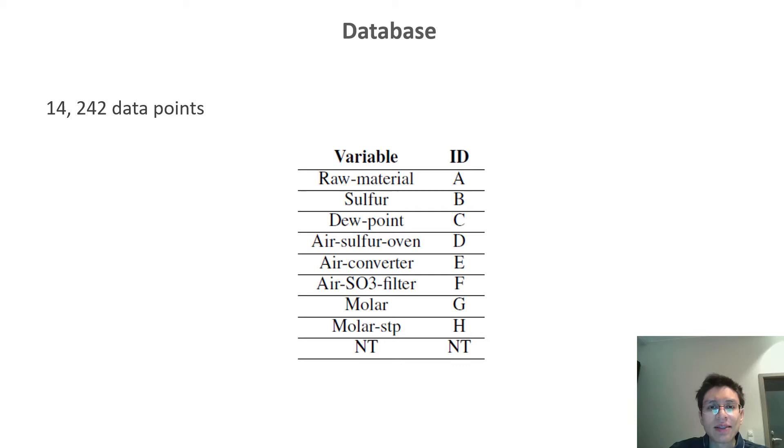In order to answer the research questions, we analyzed a database with approximately 14,000 data points. Each data point has nine variables including the amount of raw material, sulfur dew points, the amount of air injected into the sulfur oven, and so on. And finally, we also have the NT value as computed by the specialist. Each variable has an associated ID just for readability purposes. And the idea is to use the first eight variables as input variables to predict the NT value. All variables are continuous, so we are going to train regression models.